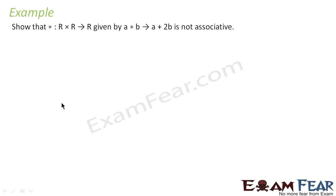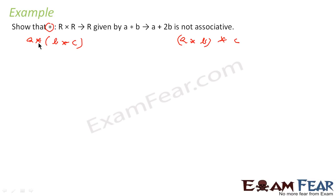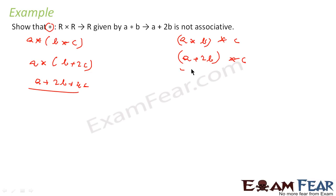Now we have to show that the operation defined by A★B = A+2B is not associative. We find (A★B)★C and A★(B★C) and check if they are equal. A★(B★C) = A★(B+2C) = A+2(B+2C) = A+2B+4C. But (A★B)★C = (A+2B)★C = (A+2B)+2C = A+2B+2C. Since A+2B+4C ≠ A+2B+2C, the operation is not associative.